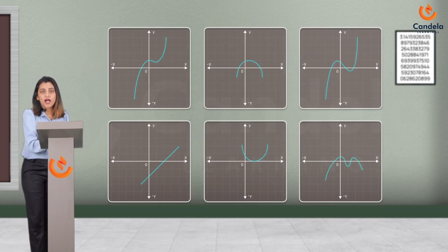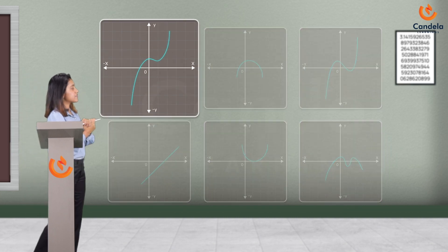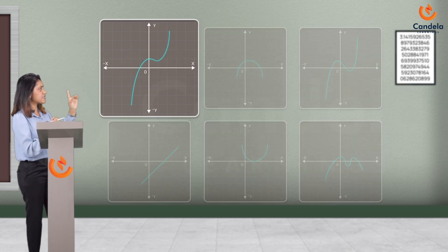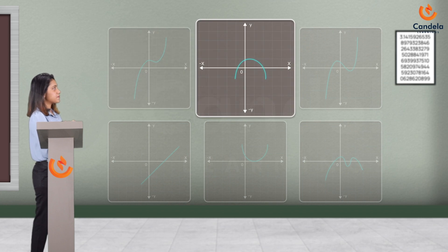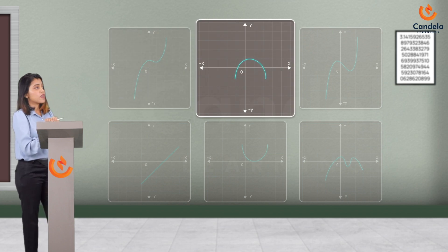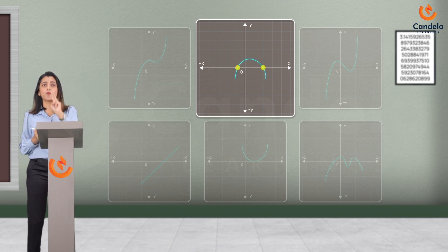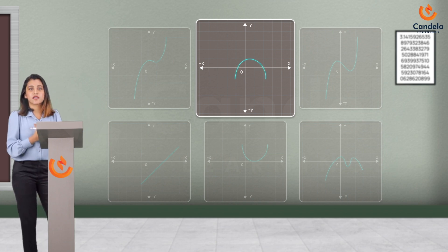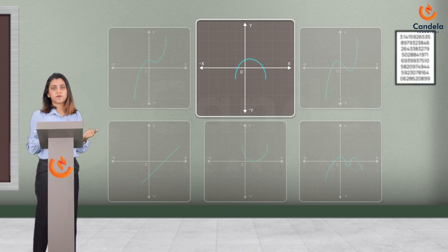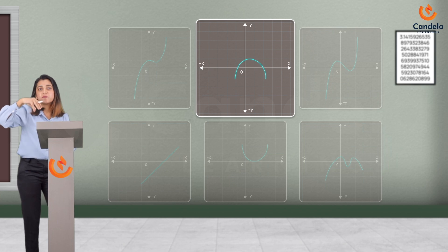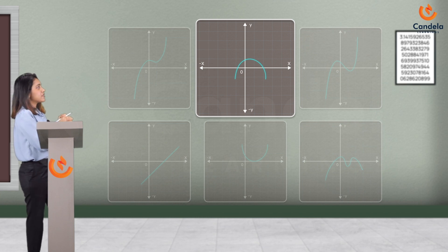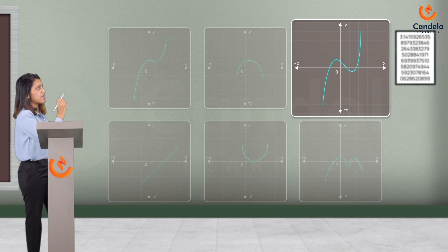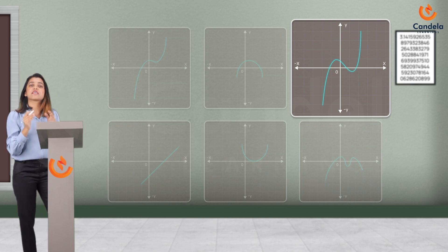Now I'll show you some graphs and I want you to answer how many zeros are there in each case. In the first case, the graph cuts the x-axis at exactly one point, which means there is only one zero. In the second case, the graph cuts the x-axis at two points, which means there are two zeros. From the figure you can tell it is a quadratic polynomial, opened downwards — meaning the coefficient of x² is negative. In the third graph, the graph cuts the x-axis at three points, which means there are three zeros.